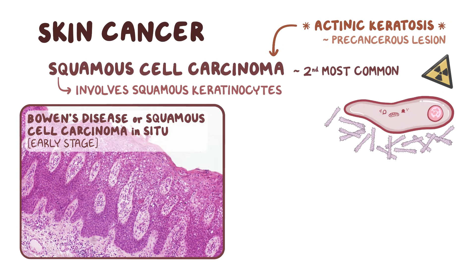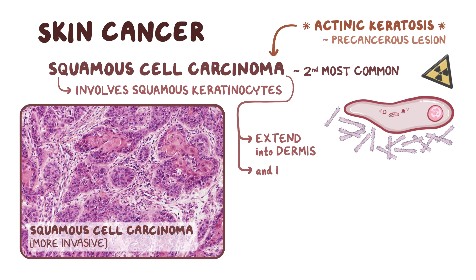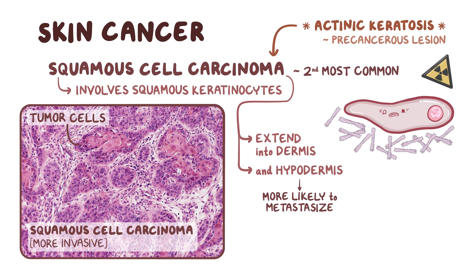At this early stage, the tumor can be found in the epidermis but has not broken through the basement membrane. Tumor cells are atypical, enlarged, and overpigmented. As squamous cell carcinoma becomes more invasive, it can break through the basement membrane and extend into the dermis, and may even reach the hypodermis, at which point it's more likely to metastasize. Tumor cells at these more advanced stages typically vary in their degree of maturity, have abnormal shapes, and overproduce keratin, forming pearls.